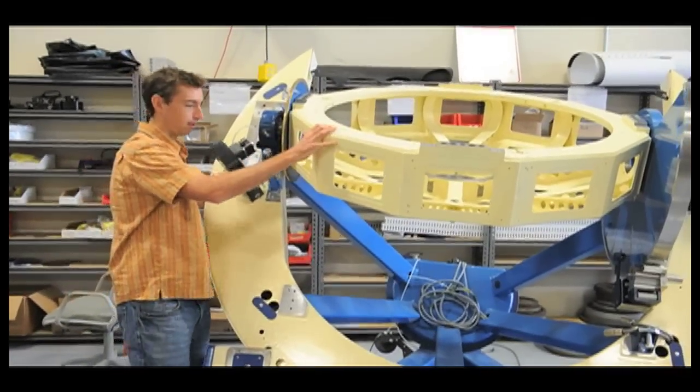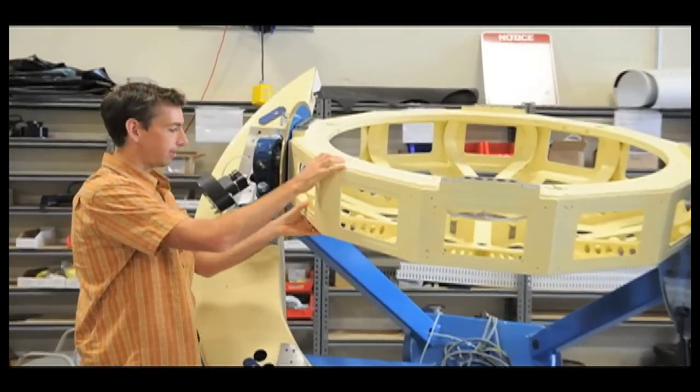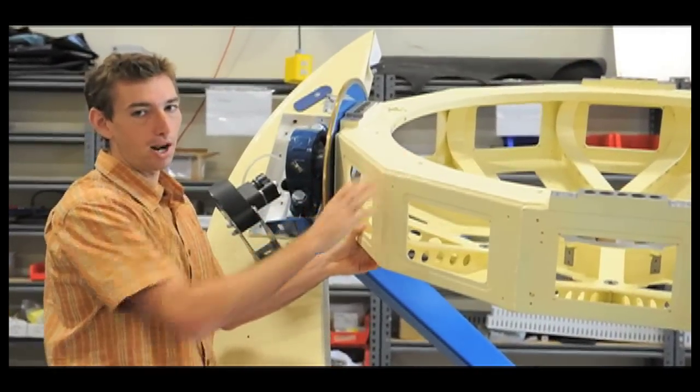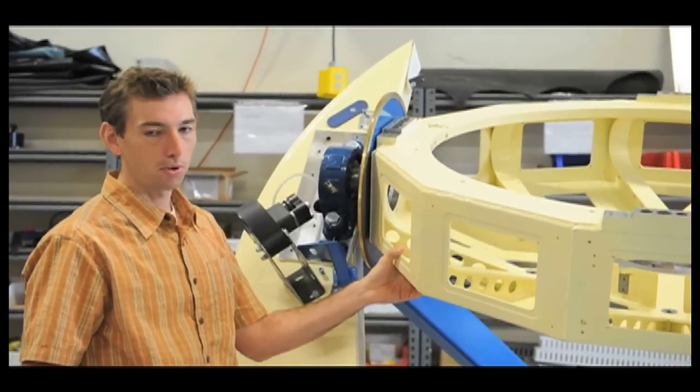The deck axis actually moves a very small amount when we're tracking a target because this is an equatorial telescope.